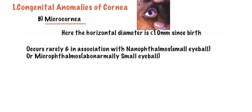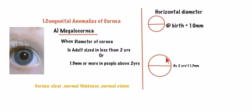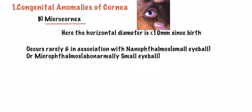Next is microcornea, the exact opposite of megalocornea. Microcornea is a condition where the horizontal diameter is less than 10 millimeters since birth. Normally at birth the horizontal diameter should be 10 millimeters, but in microcornea it is less than 10 millimeters from birth.